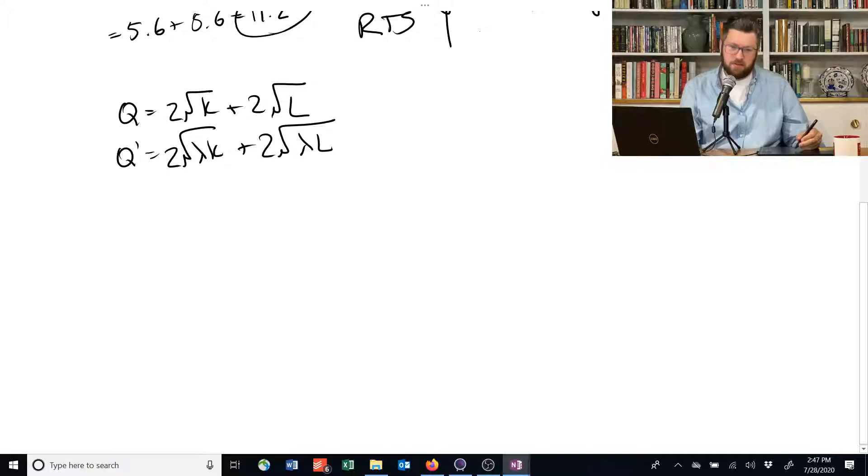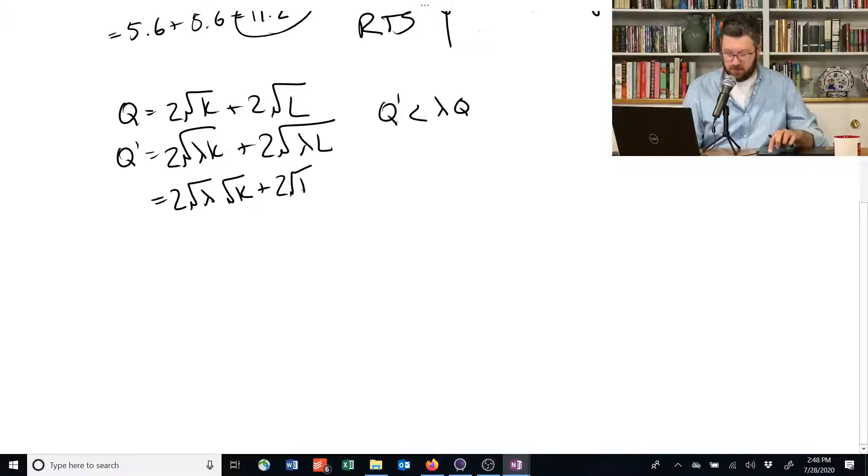We can rearrange this to basically try to show that Q prime is going to be less than lambda Q. So how do I do that? Well, I'm going to just factor out lambda, because the square root sign is really the same as taking each of these to the power of 1 half. And so I can multiply, or I can sort of split them, it's just an exponent rule. Then I can pull that out front, factor out this.